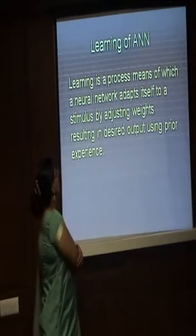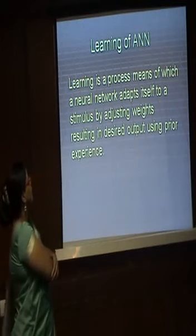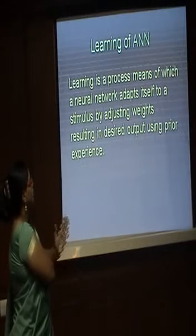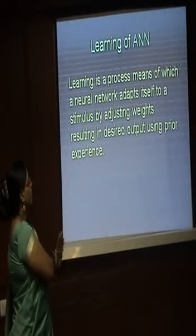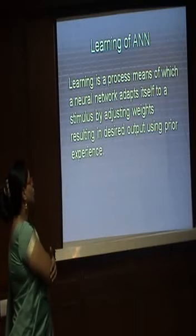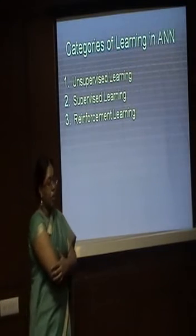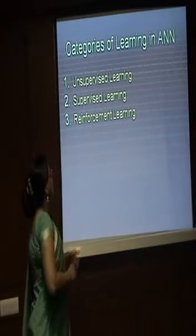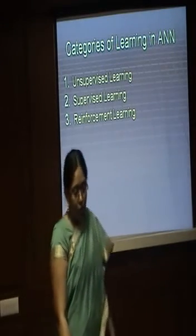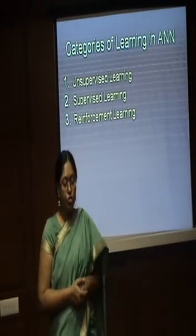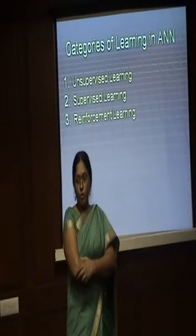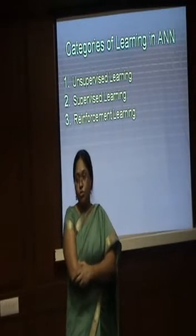Learning of artificial neural networks: learning is a process by which a neural network adapts itself to a stimulus by adjusting weights, resulting in desired output using prior experience. There are three categories of learning in artificial neural networks: first is unsupervised learning, next is supervised learning, and third is reinforcement learning.